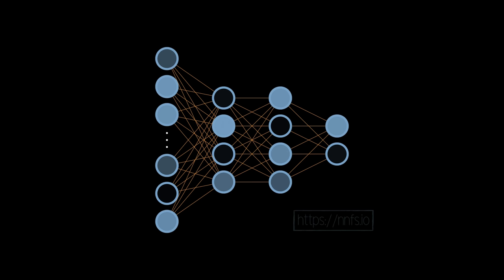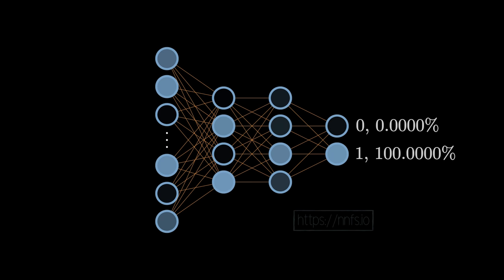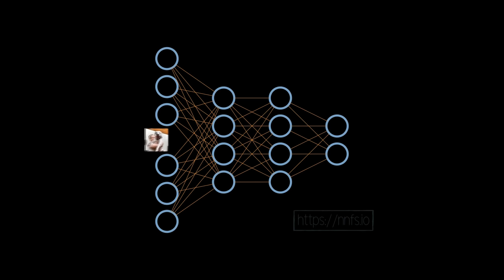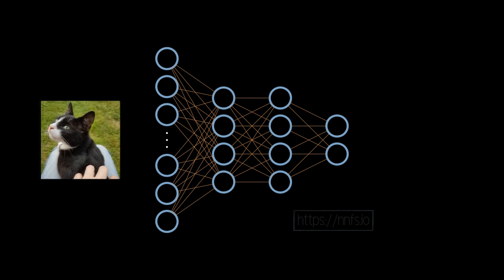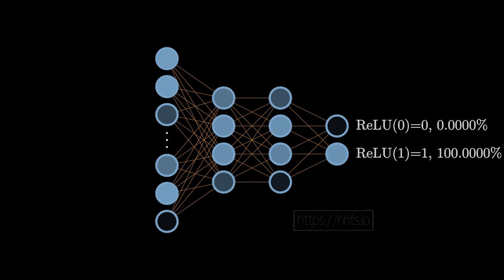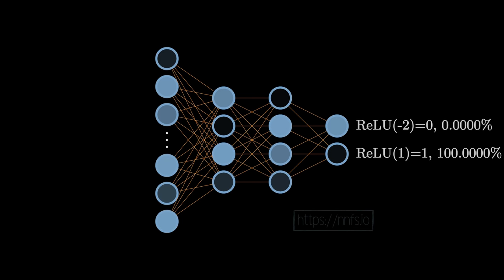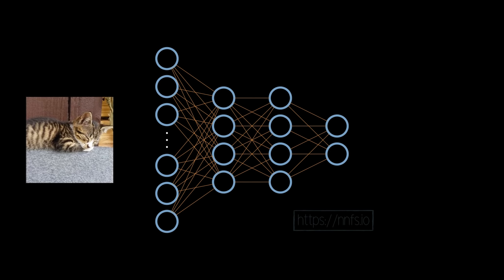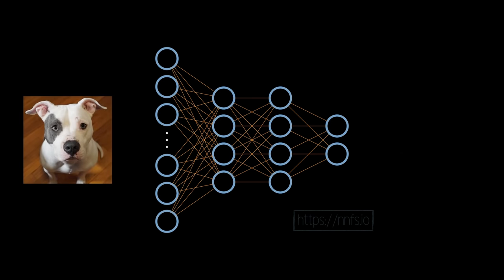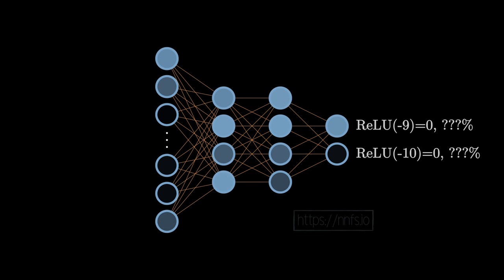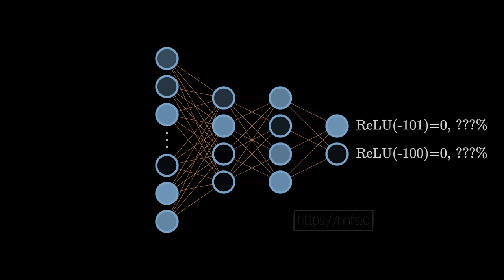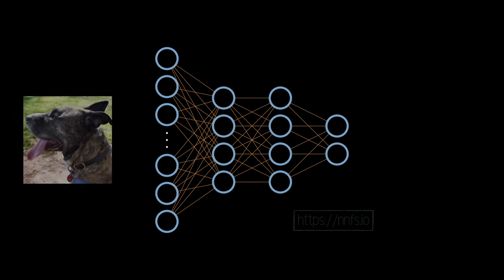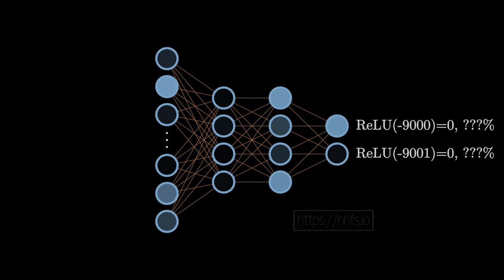One immediate idea is to normalize by taking each neuron's value divided by the total of all neuron values in that layer. But the problem with keeping the rectified linear activation function is that if any output value is negative, ReLU clips it to zero — and when creating a probability distribution, it will always be zero whether it was negative 20 or negative 9,000. If all values are negative, it becomes impossible to learn from.